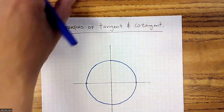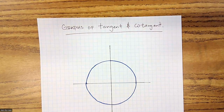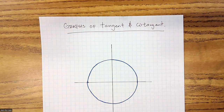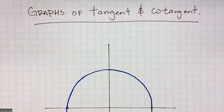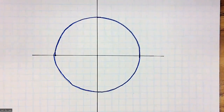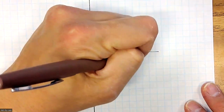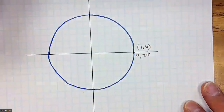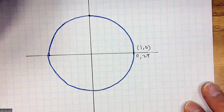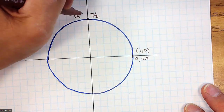Welcome — this is the graphs of tangent and cotangent. Just like sine and cosine and all the different types of functions, graphing tangent and cotangent is based off of the unit circle. The unit circle here has 0 or 2π at the point (1, 0), and π/2 at the point (0, 1).